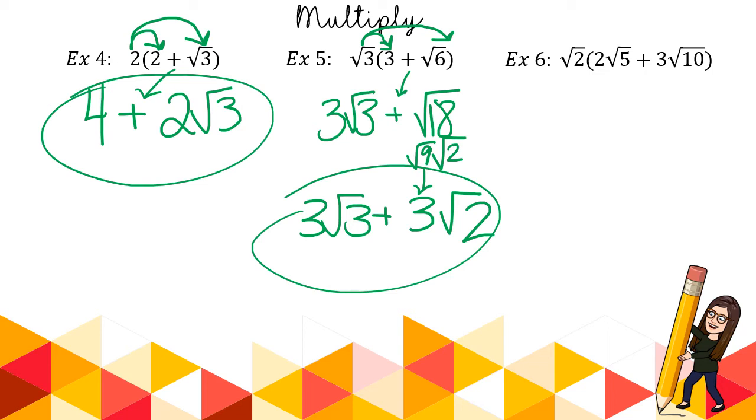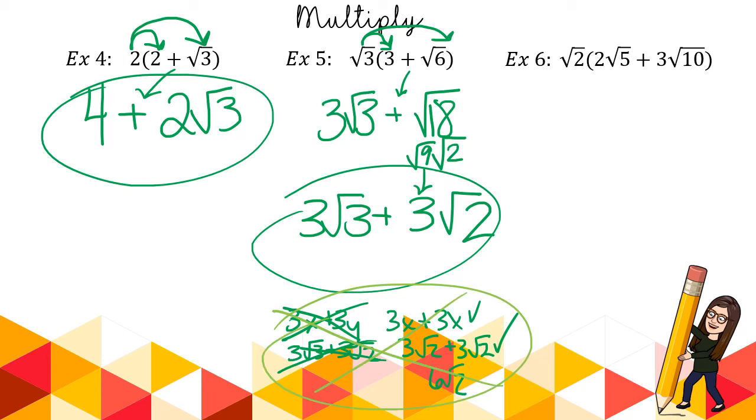In a later lesson we'll get into when can I add, when can I subtract. And in just a little preview, you don't have to know this yet, but if I have a 3x and a 3y, can I add them? No, because they're different. If I have a 3x plus 3x, can I add them? Yes I can. So it's similar with radicals. Can I have a 3 radical 3 plus 3 radical 2? Nope, because they're different. Could I have a 3 radical 2 plus a 3 radical 2? Yes I can, to get a 6 radical 2. So again, you don't need to know that right now. That's just a little preview.